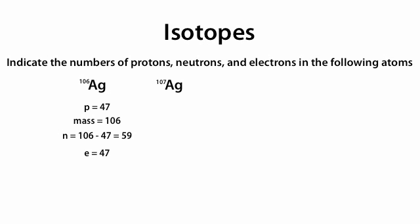Next, we're given Ag-107. Ag is still silver. Silver has a number of protons equal to 47. Its mass here is different — its mass is equal to 107. The number of neutrons is now 60: 107 minus 47, which is the atomic mass minus the atomic number, equals 60. The number of electrons is still always equal to the number of protons, which is 47.